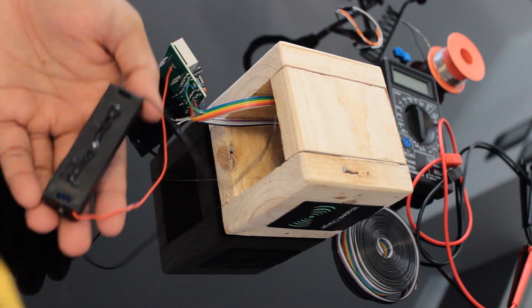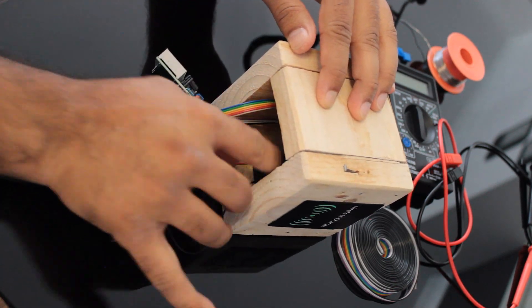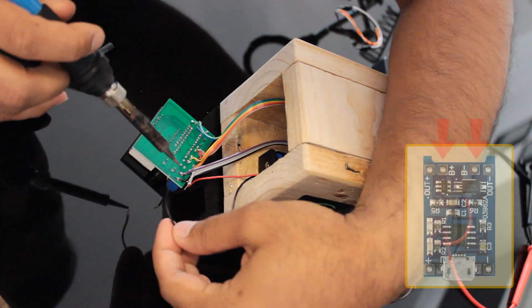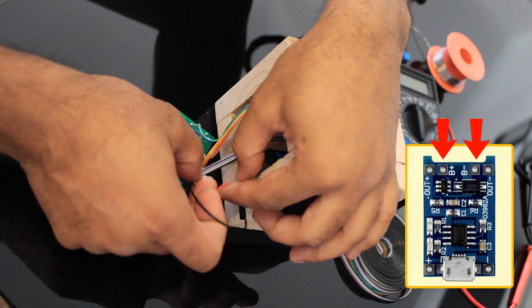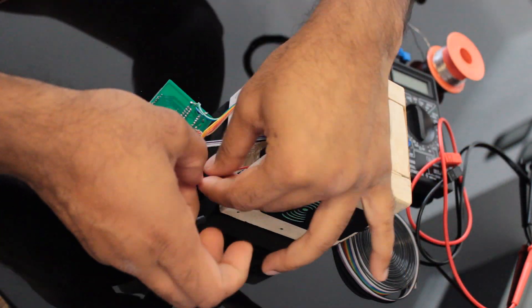Next, I'm installing the 3.7V 18650 battery using hot glue inside the wooden enclosure. Once fitted, I'm connecting the B-plus and B-minus ports of the TP4056 module to the positive and negative end of the battery.